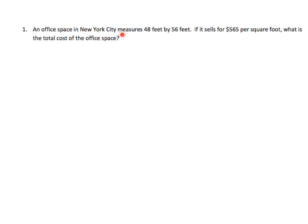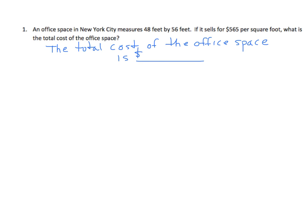This is the one problem from our practice set: an office space in New York City measures 48 by 56 feet. If it sells for $565 per square foot, what is the total cost of the office space? We'll make our statement: the total cost of the office space is blank, and the unit is going to be dollars. One unit of office space — one square foot — is $565. I have to calculate how many units. When we talk about square feet, we're talking about area, and we find area by multiplying length times width.